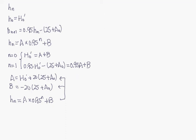And the next step is we want to solve a minimum n such that Hn is smaller or equal to 0. So we can write this as A times 0.95^n plus B should be smaller or equal to 0.